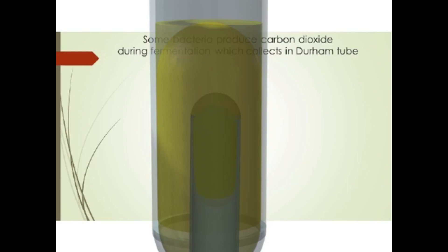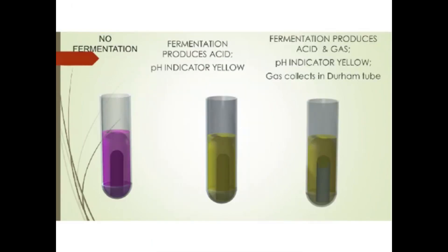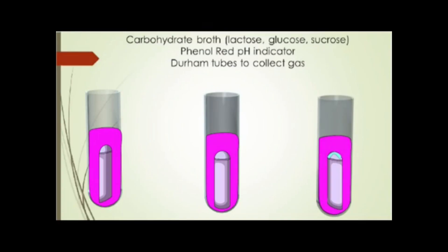When bacteria break these sugars down into pyruvate, some then have the ability to further metabolize pyruvate into a gas. Not all bacteria can metabolize a given sugar, which one can visualize if there is a pH indicator in the sugar solution — it will turn yellow if the sugar is metabolized to make an acid like pyruvate acid. Additionally, an upside-down small test tube called a Durham tube inside the larger test tube can collect any gas produced, allowing further identification steps.